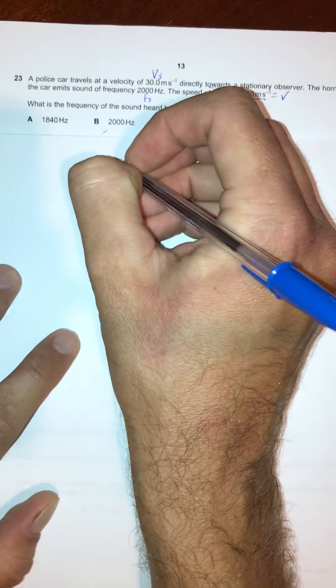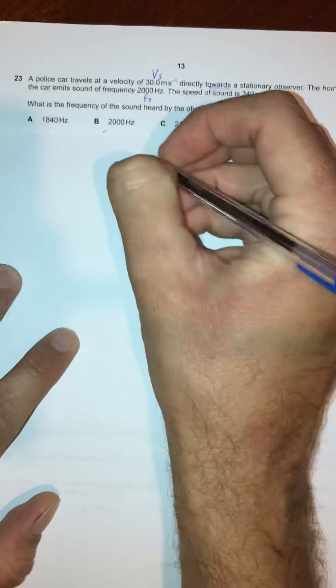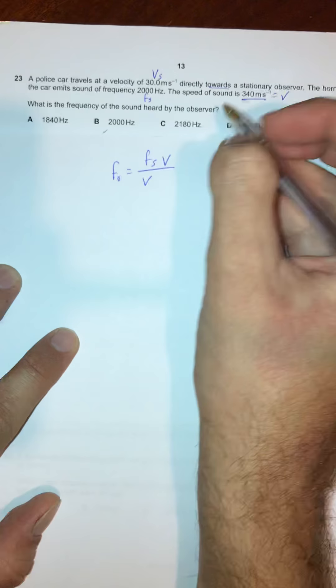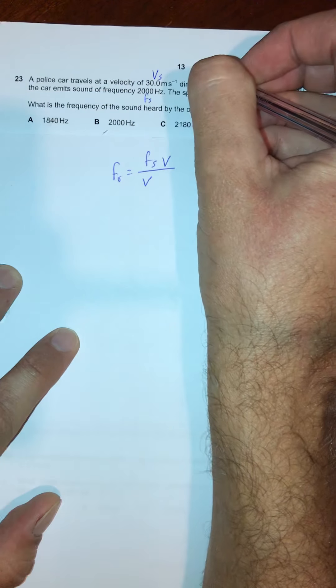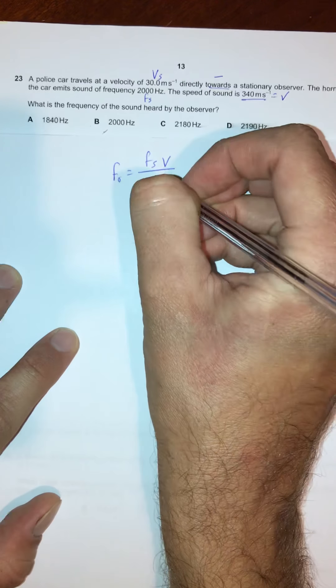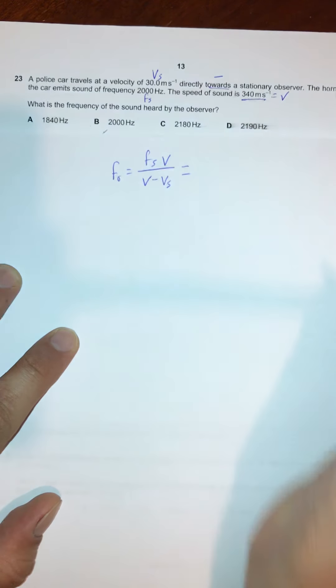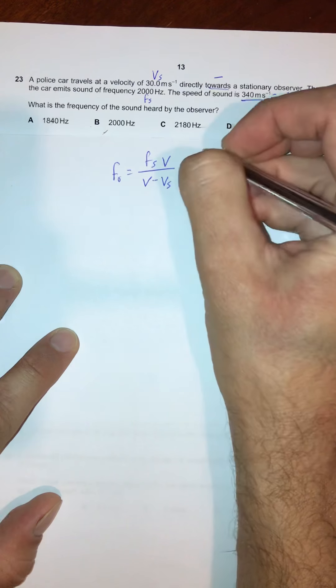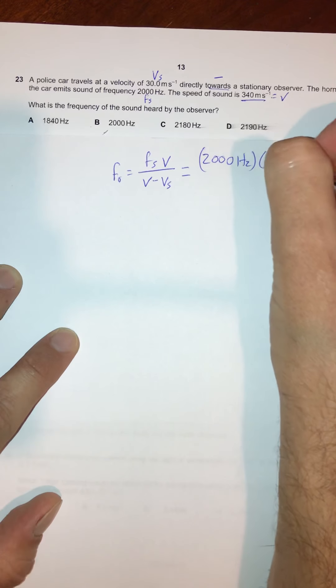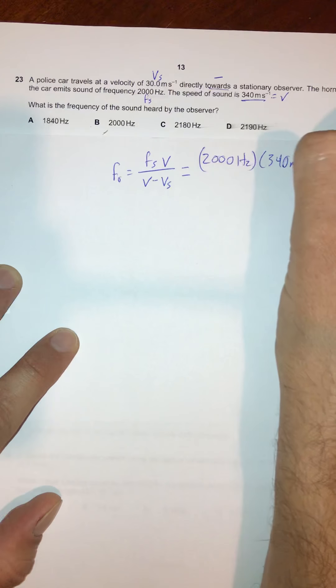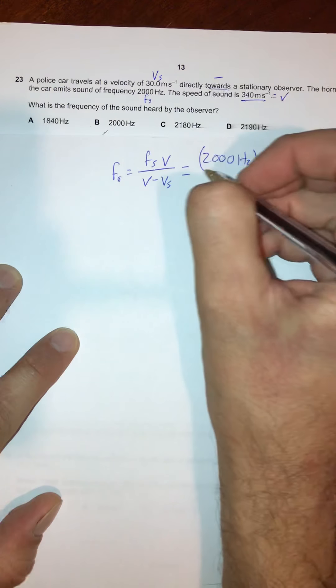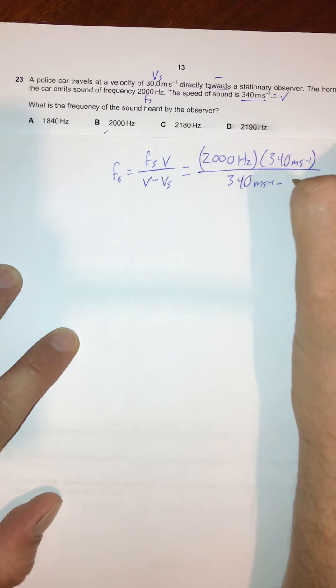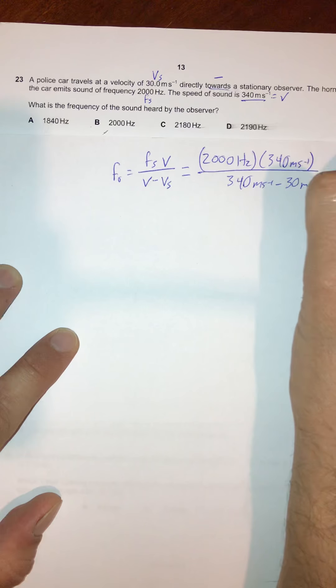So remember that the equation is that the observed frequency equals the frequency of the source times the velocity of the wave, divided by the velocity of the wave, and in this case, directly towards means we're subtracting the velocity of the source in the denominator. I can substitute in values from the problem. 2,000 hertz is the frequency of the source, times 340 meters per second is the velocity of the wave, divided by the velocity of the wave minus the velocity of the source.